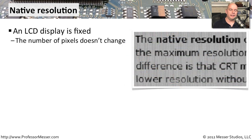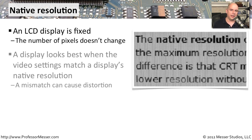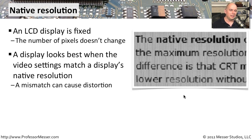When working with LCD displays, an important specification is the native resolution. When using CRTs and changing resolutions, the display could simply change what it was presenting on the tube. But LCD displays can't change the number of pixels they have — they will always have a fixed number of pixels wide and high. When we change the resolution on our computers, the LCD has to adjust itself, and if there is a mismatch you might see letters looking a little thinner or fatter as the display tries to fit the content at that resolution.